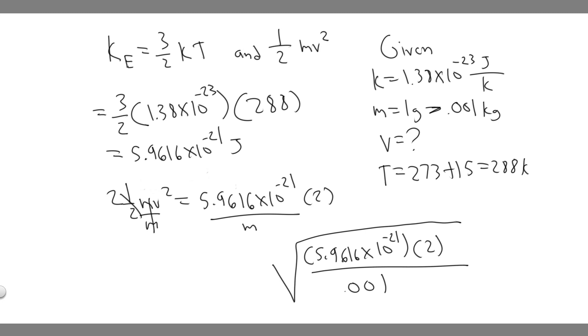So go ahead and plug this in your calculator. And what you're going to find is that our answer is going to be 3.5 times 10 to the minus 9. That's just rounded.